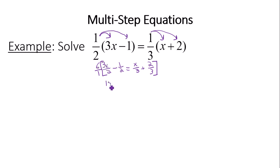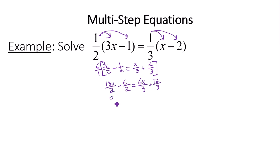6 times 3x/2 gives you 18x/2, and 1 times 2 gives 2 on the bottom. 6 times 1 gives minus 6 over 2. 6 times x/3 is 6x/3, and 6 times 2/3 is 12/3. Cleaning this up gives you 9x minus 3 equals 2x plus 4 — much more appealing to solve than what we originally had.